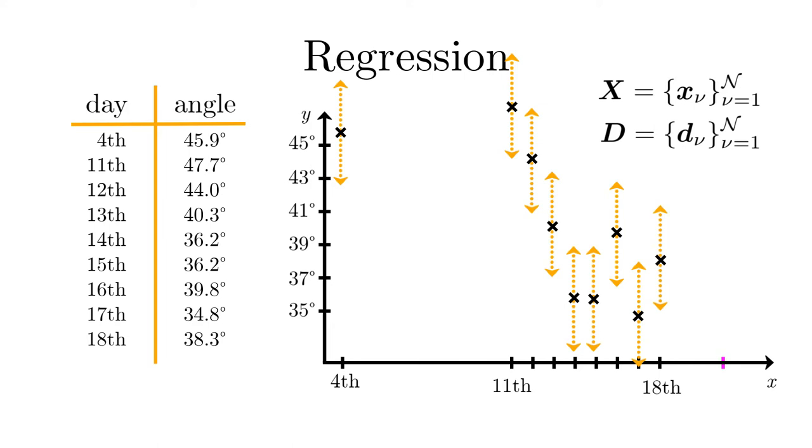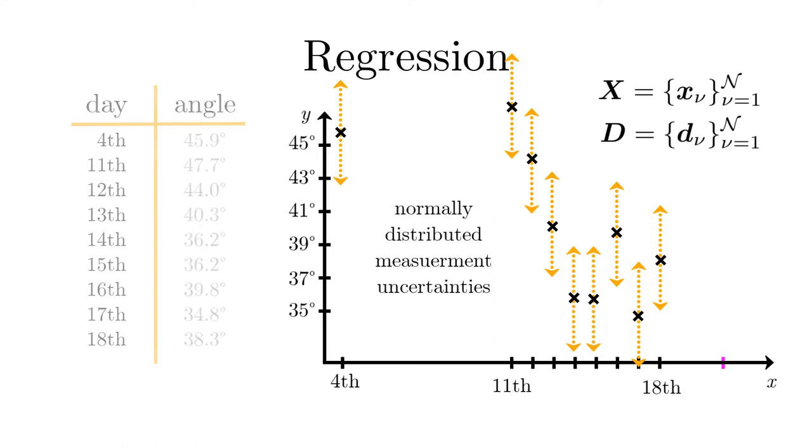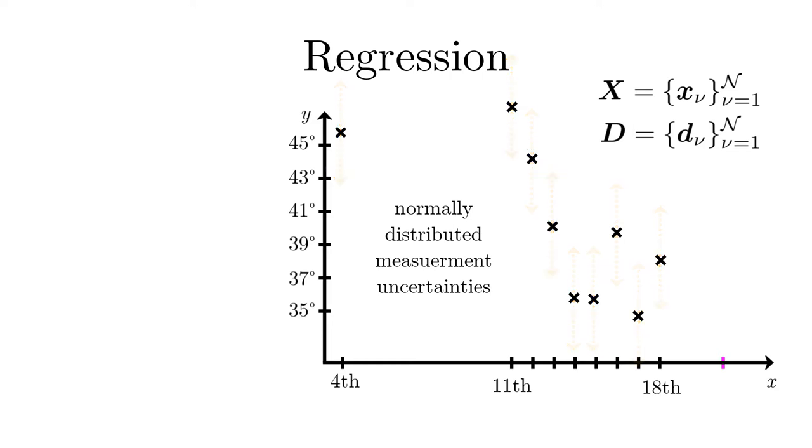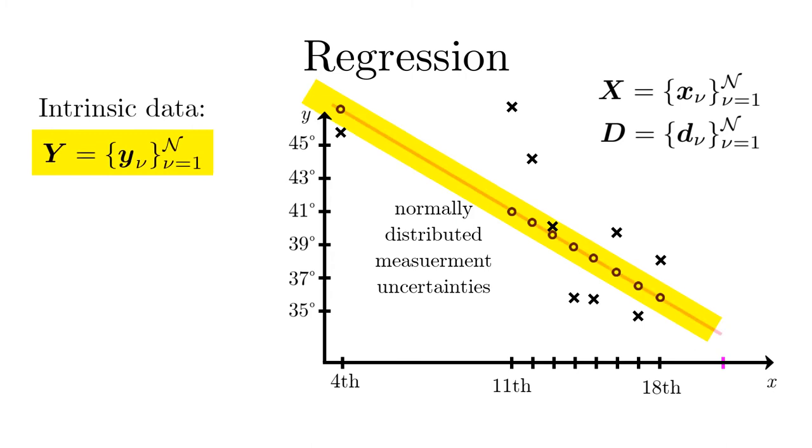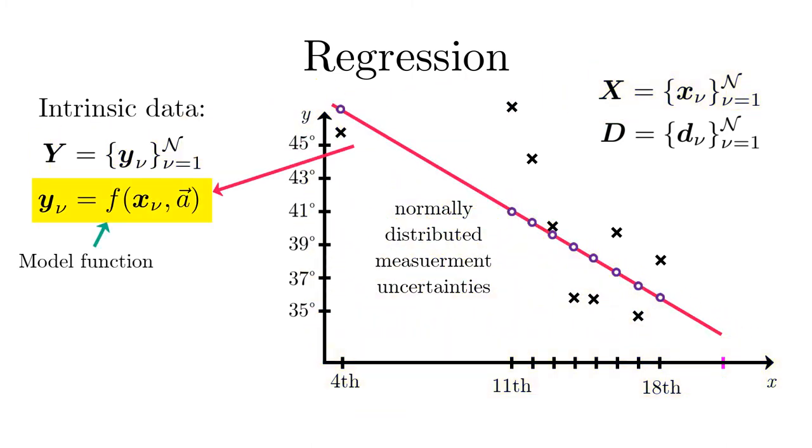In most cases, like in the situation of Captain Venn, these are additive Gaussian uncertainties. Next we assume that without the experimental uncertainty there is a relation between the intrinsic data and the pivot points that can be described by a deterministic function, for instance by a physical law.